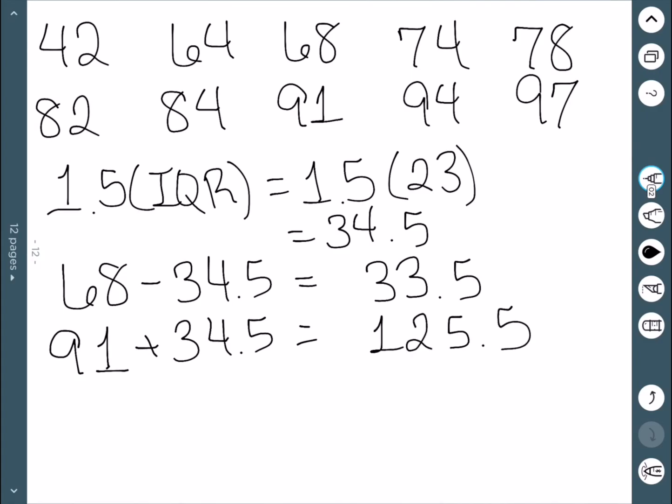In this data set, our lowest value was 42, which fits in this range, and our highest value is 97, which also fits in this range. So here we have no outliers.